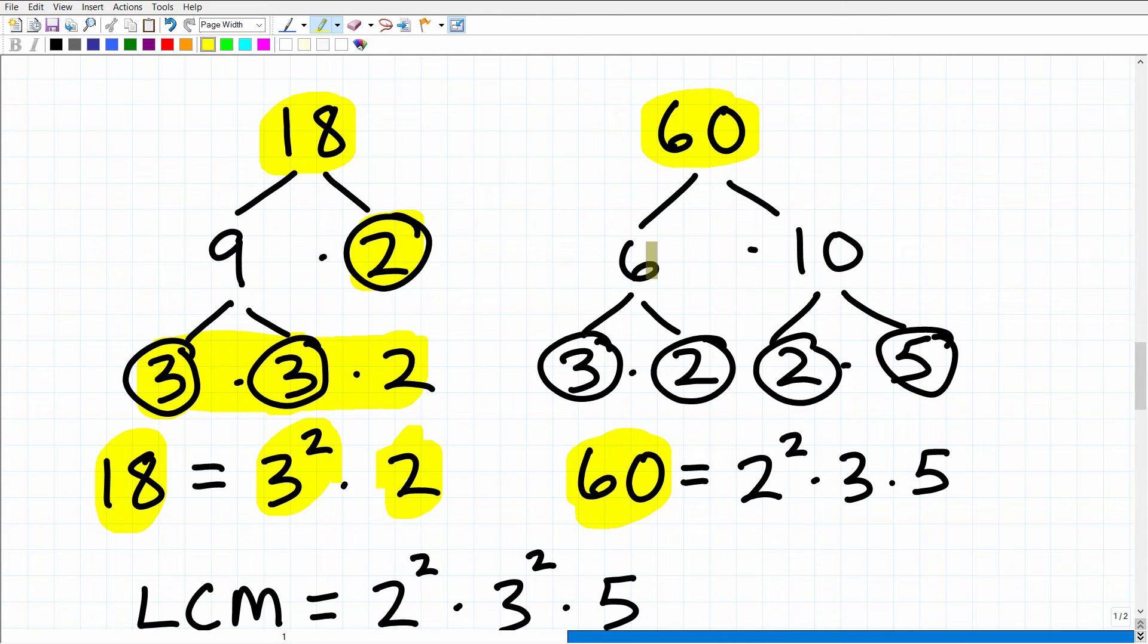So let's do this for 60 as well. So we have 6 times 10. Now, again, you can use different factors. It doesn't make a difference. You'll get to the same prime factors. So 6 is 3 times 2. These are prime. So I'll circle these. 10 is 2 times 5. These are prime. So here we have 3 times 2 times 2 times 5. So 2 times 2 is, we can write that as 2 squared. Remember, anytime you have a repeating factor, write them as powers. So 2 times 2 is 2 squared times 3 times 5 is 60.